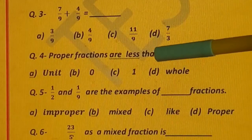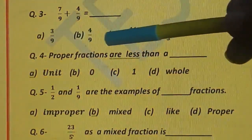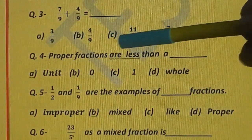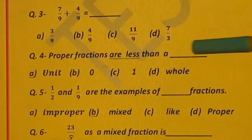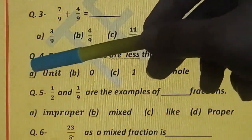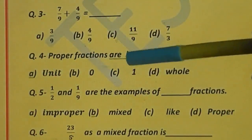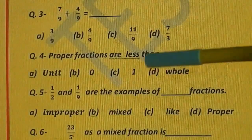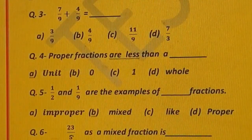Question number 4. Proper fractions are less than dash. Options are: A) unit, B) 0, C) 1, and D) whole.